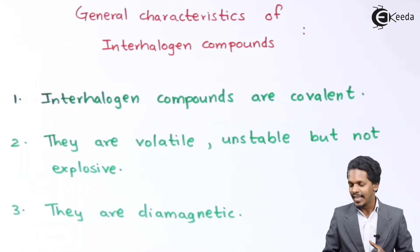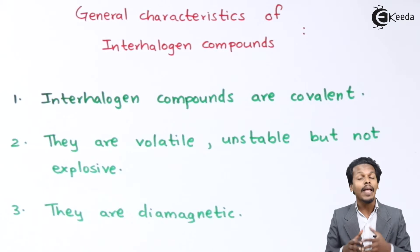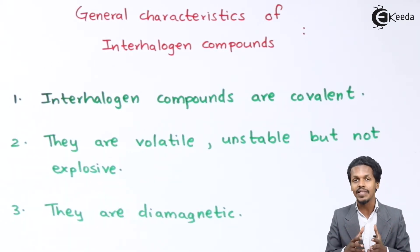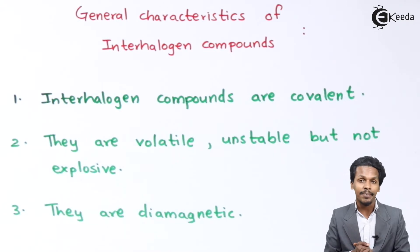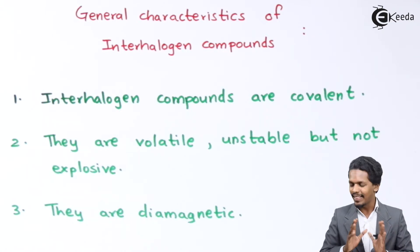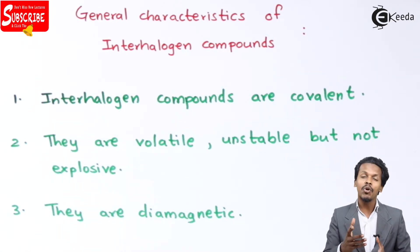The next characteristic is that interhalogen compounds are diamagnetic in nature. They are diamagnetic because all electrons are paired and involved in bonding with each other. For comparison, an atom like fluorine by itself is paramagnetic in nature. So those were the three physical characteristics of interhalogen compounds.